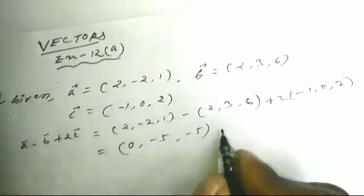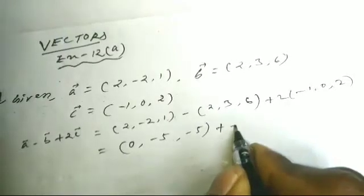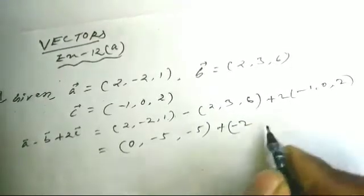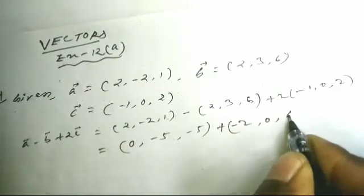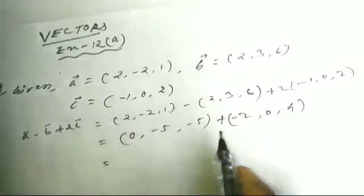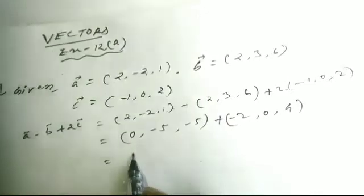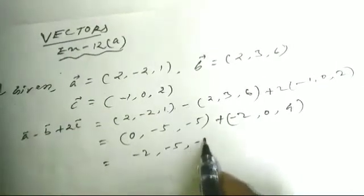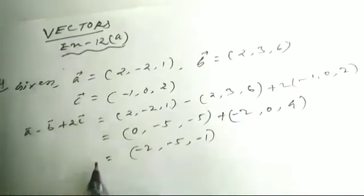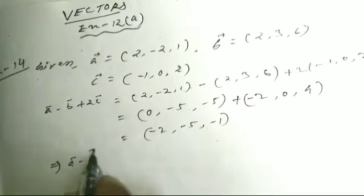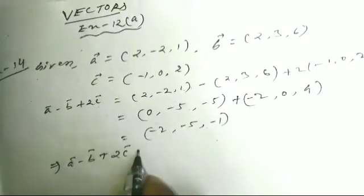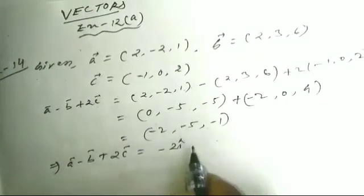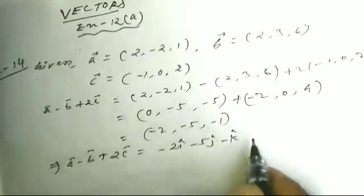So this implies a vector minus b vector plus 2c vector equals minus 2 i-cap minus 5 j-cap minus 1 k-cap, simplified correctly into vector form.